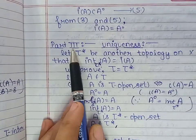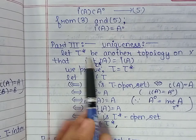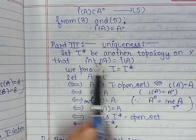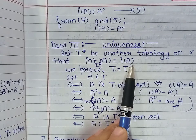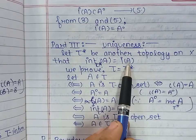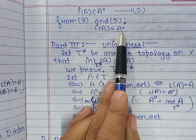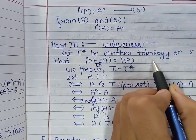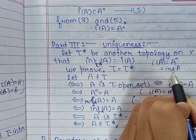In the last step, we prove the uniqueness of this topology. Let τ* be another topology on the set X such that the interior of A with respect to τ* also equals I of A. We now have I of A equal to the τ-interior of A, and also I of A equal to the τ*-interior of A. So I of A, the τ-interior of A, and the τ*-interior of A are all the same.